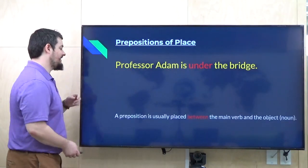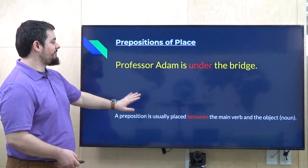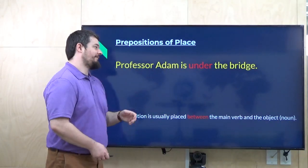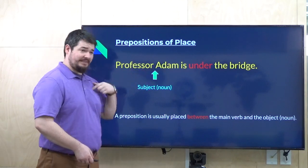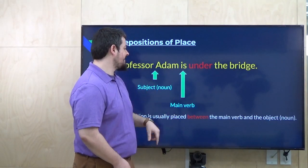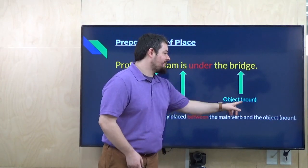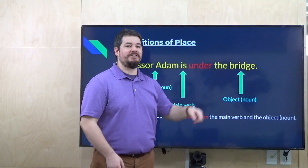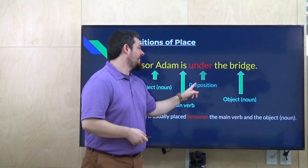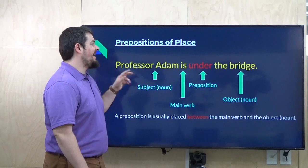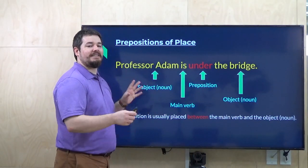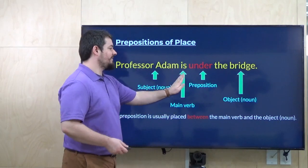We're going to look at the sentence. It's good to point out that the preposition is usually placed between the main verb and the object of the sentence — the object is a noun. So in this sentence, we have our subject, Professor Adam; a main verb, 'is'; and then our object noun. If you just say 'Professor Adam is the bridge,' it means I am a bridge, which is strange. So we need the preposition 'under.' Adam is under the bridge. The basic sentence structure is: subject, main verb, preposition, object.